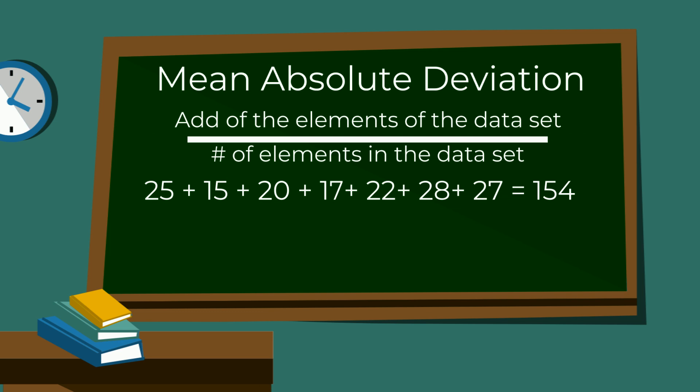When you add the elements of this data set, it equals 154, and divide this by the number of elements in the data set, which is 7, and it equals 22. So Sunnyville has an average of 22, or the mean of 22.